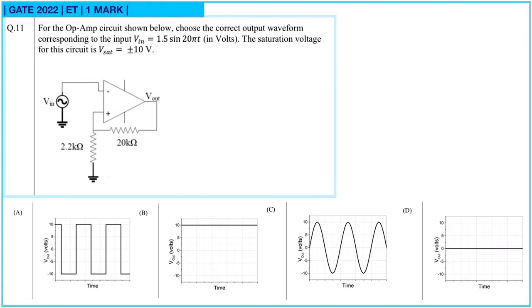Hello gate aspirants. Welcome to part 13 of gate electronic series. Question 11. For the op-amp circuit shown below, choose the correct output waveform corresponding to the input Vin equal to 1.5 sin 20 pi T.